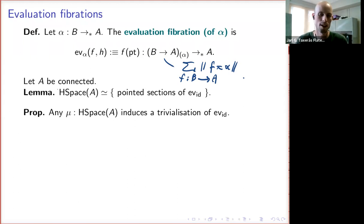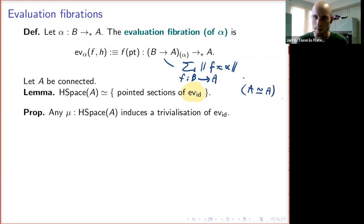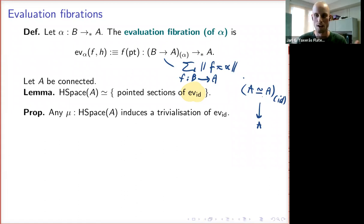Now let A be connected. The type of H-space structures on A is equivalent to the type of pointed sections of the evaluation fibration at the identity. For convenience, this is the domain — the path component of the identity — and it evaluates at the point. Maps from A to A in the path component of the identity are all automatically equivalences, since they're merely equal to the identity. This lemma is completely formal; in fact in Coq we have a tactic which can almost prove this with a little help — it's just about contracting sigmas and juggling data around.